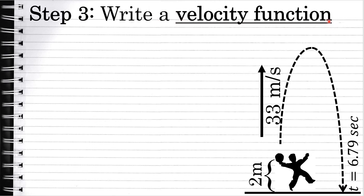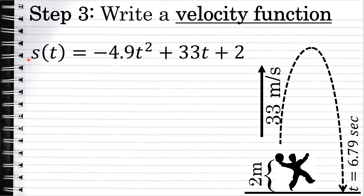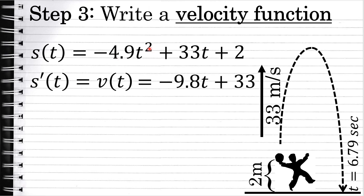A velocity function tells us how fast the ball is moving at any point in time. To write a velocity function, you begin with the position function and differentiate with respect to time. The derivative of the position function is equal to the velocity function, which in this case is negative 9.8t plus 33. The derivative of negative 4.9t squared is negative 9.8t, the derivative of 33t is 33, and the derivative of 2 is 0.